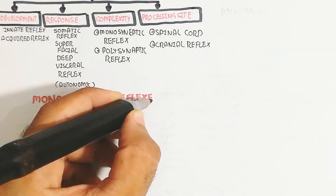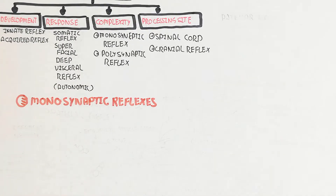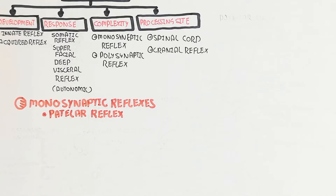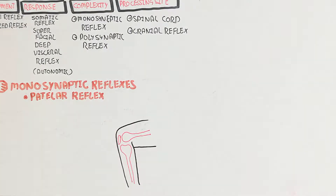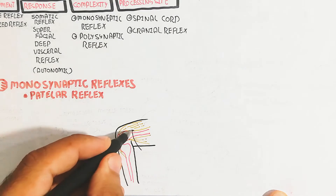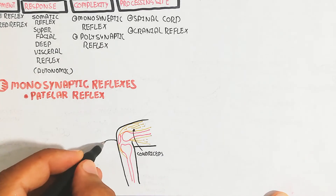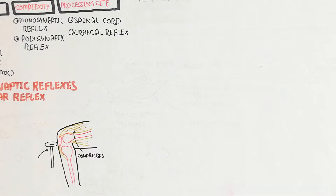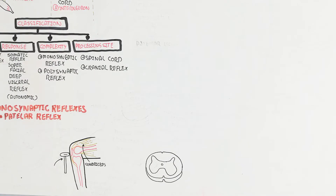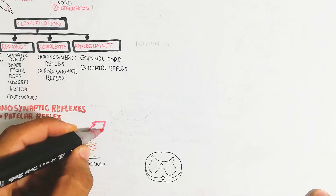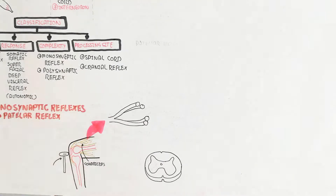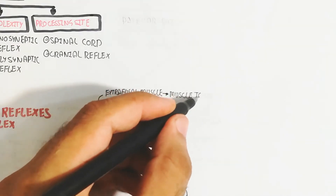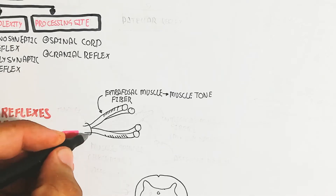The cranial reflex involves the brain. First, let's understand monosynaptic reflexes using the patellar reflex as the best example. Here is the leg containing the patella. The quadriceps (upper part) is the flexor muscle, while the lower muscle is the extensor. The muscle contains a tendon; tendons attach muscle to bone, while ligaments attach muscle to muscle.